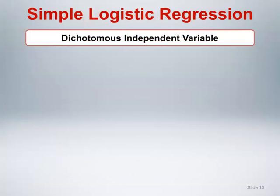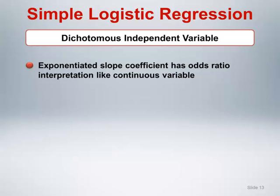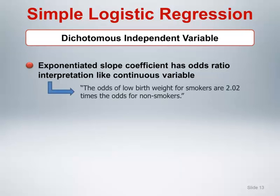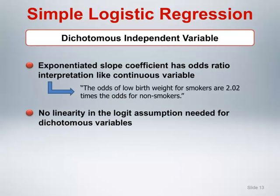Although we will discuss the simple logistic regression model examining the relationship between low birth weight and smoking status in the StatCrunch demo, let's say a few words about categorical independent variables here. The exponentiation of the slope coefficient of a dichotomous variable has an odds ratio interpretation analogous to that for a continuous variable. For example, for smoking status, the interpretation would be: the odds of low birth weight for smokers are 2.02 times the odds for non-smokers. Additionally, there is no linearity in the logit assumption needed for a dichotomous independent variable for validity of its interpretation.